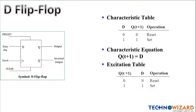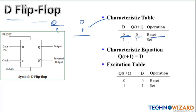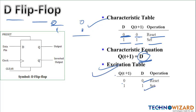Next is the D flip-flop. In the D flip-flop we always get the same output as the input: if D=0 the output is zero (reset condition), and if D=1 the output is one (set condition). The characteristic equation is simply Q(next) = D. The excitation table is straightforward: input zero gives output zero, input one gives output one.